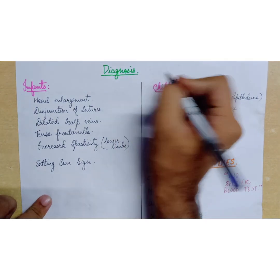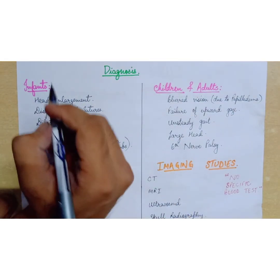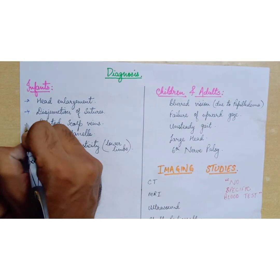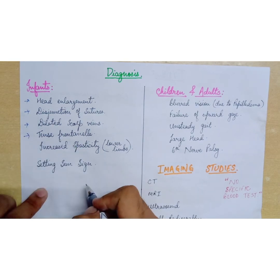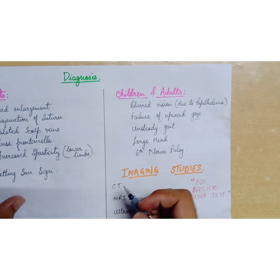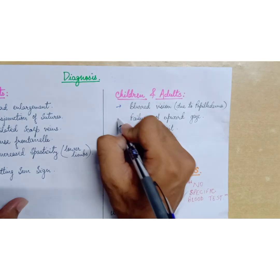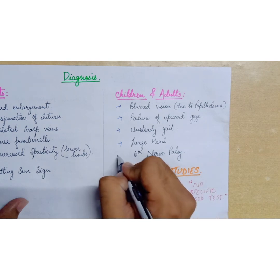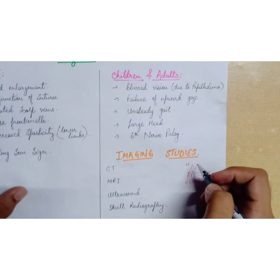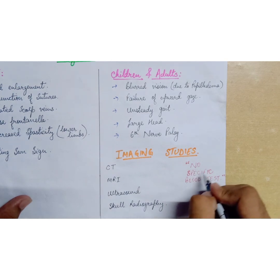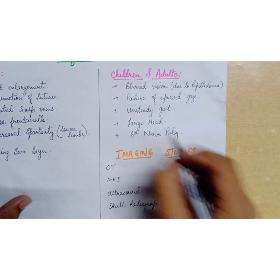Diagnosis of hydrocephalus is mainly based on clinical findings. In infants: enlargement of the head, disjunction of sutures, dilated scalp veins, tense fontanels, increased spasticity in the lower limbs, and the setting sun sign. In children and adults: blurred vision, failure of upward gaze, unsteady gait, large head, and sixth nerve palsy. Imaging studies include CT scanning, MRI, ultrasound scanning, and skull radiography. No specific blood test is done for diagnosis.